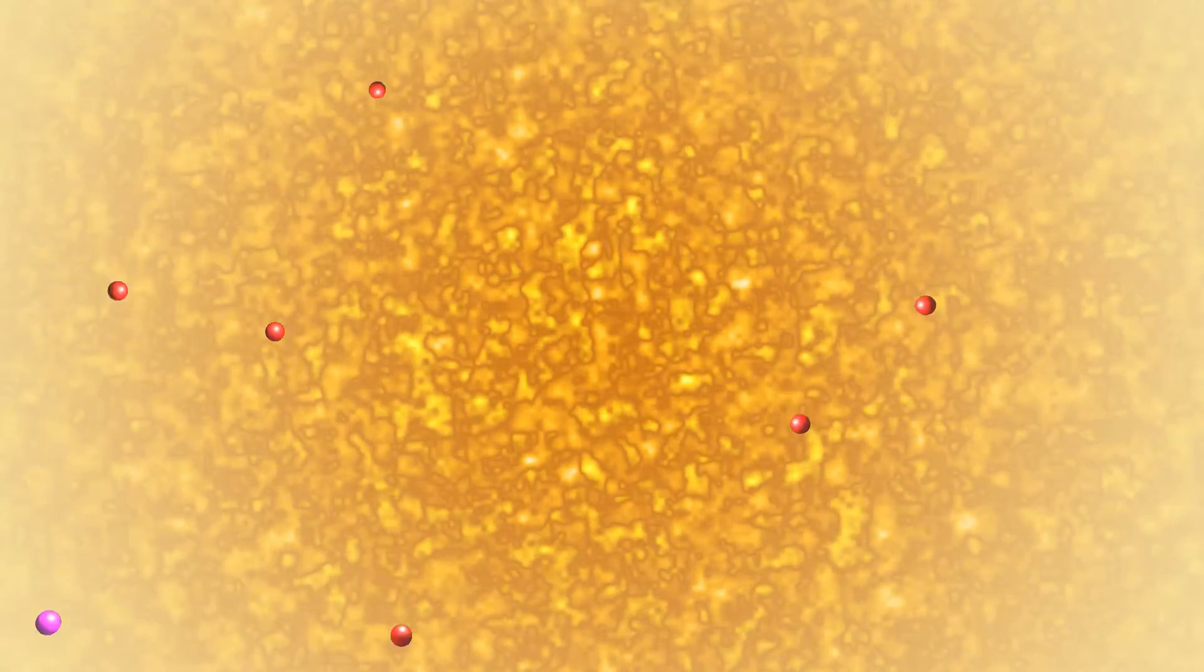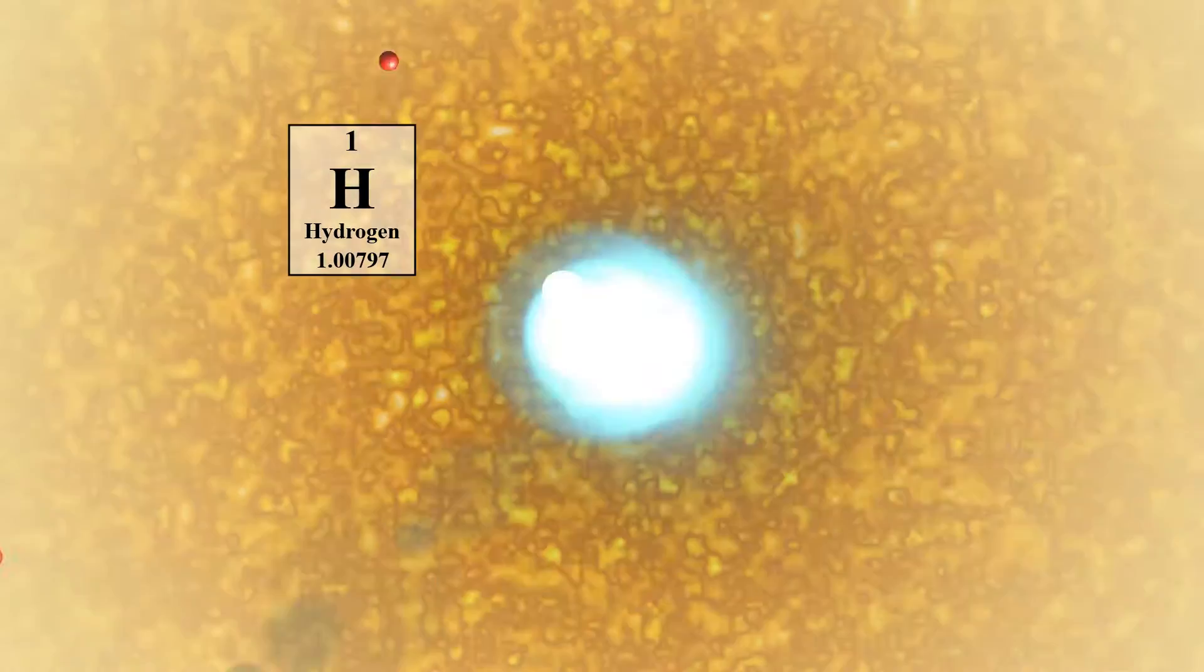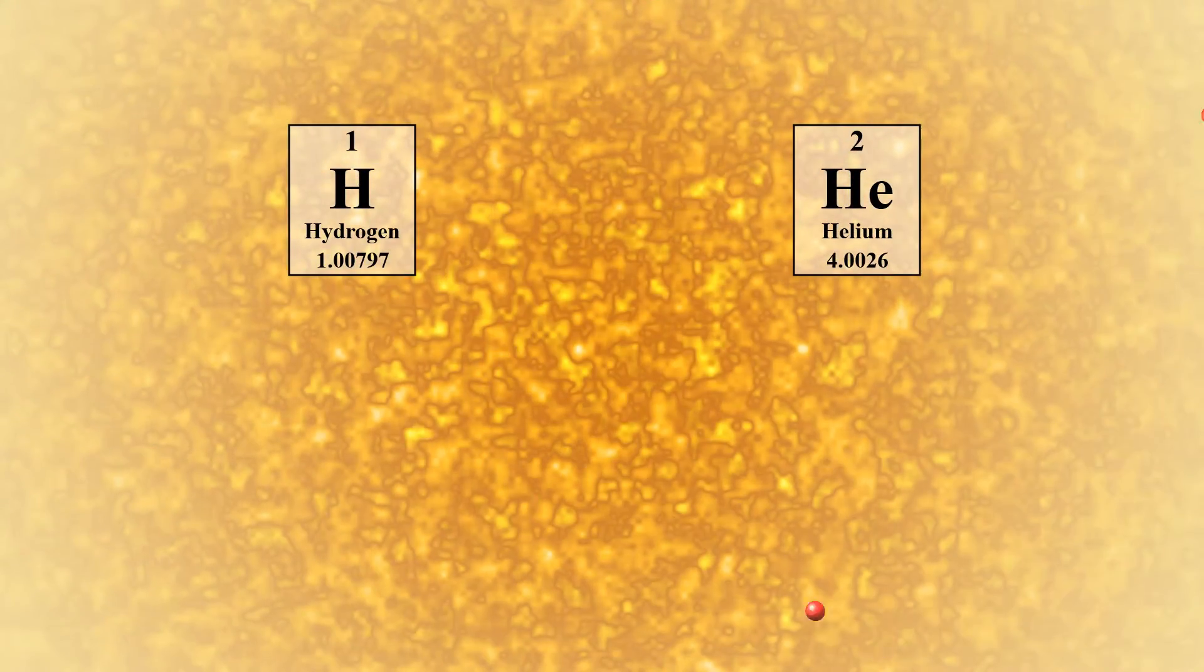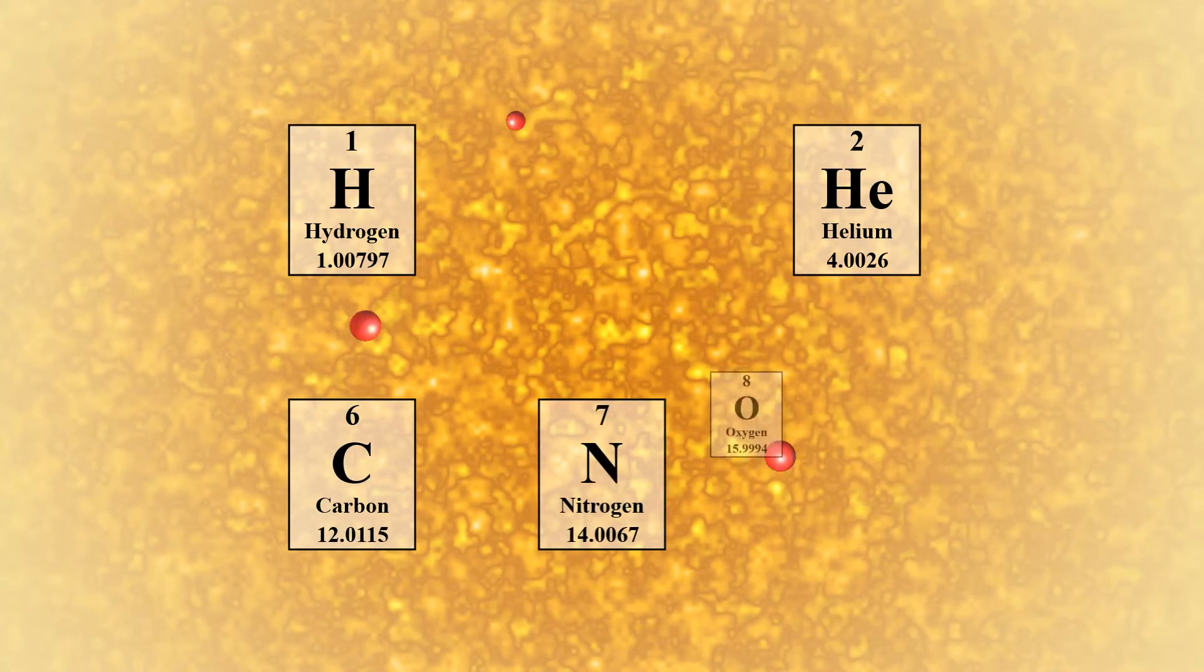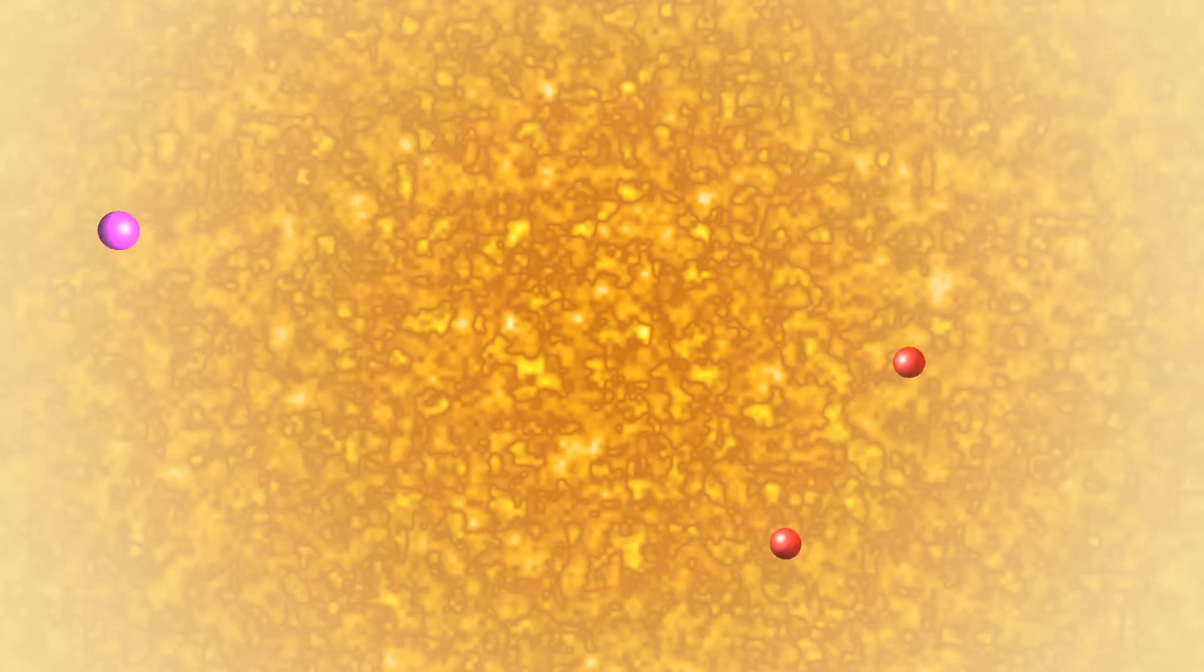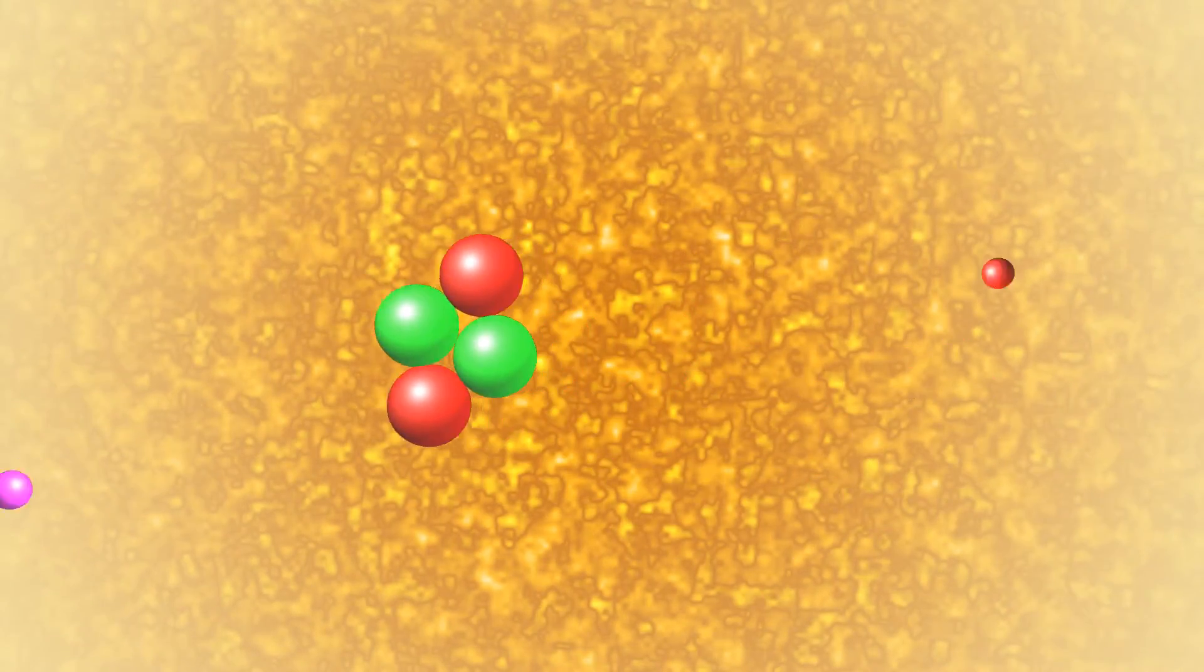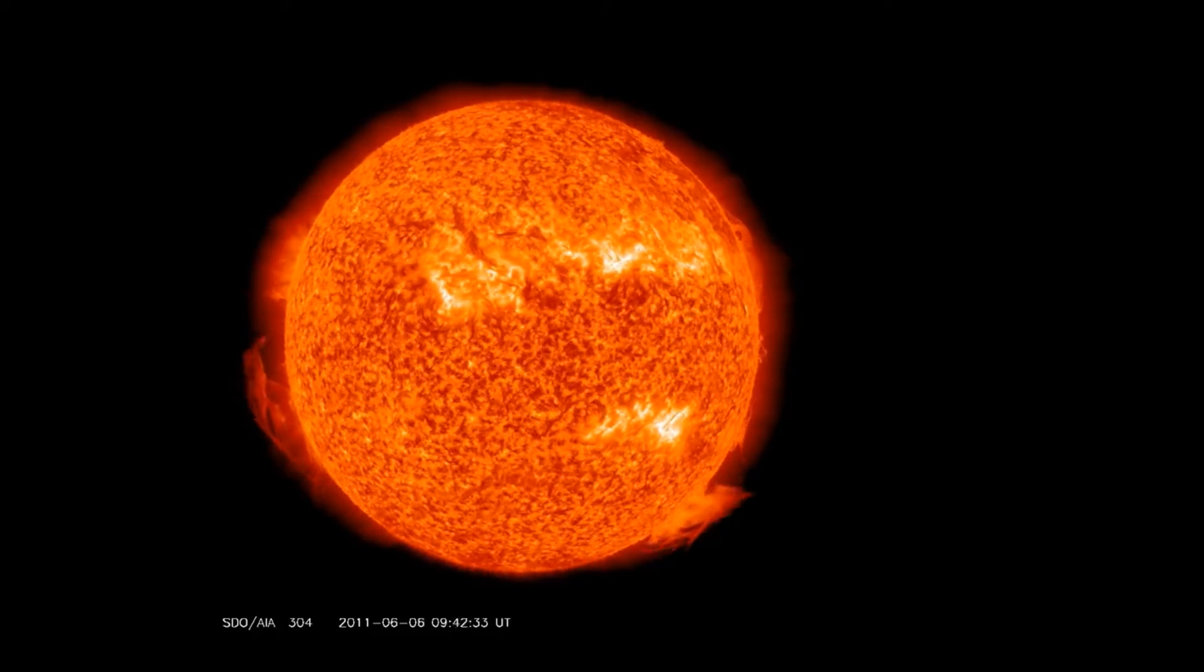When a star is born, it is composed of about 71% hydrogen and 27% helium, with trace amounts of other elements like carbon, nitrogen, and oxygen. Every time hydrogen nuclei fuse into helium nuclei, a photon of light is released. This is why the stars shine.